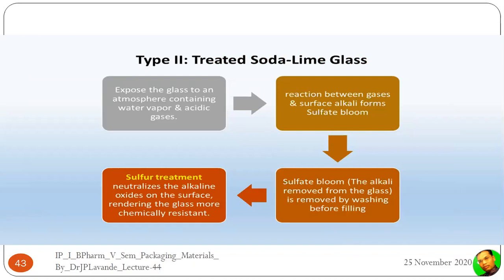In the sulfur treatment process, the glass is exposed to an atmosphere containing water vapor and acidic gases, causing a reaction between the gases and surface alkali to form a sulfate bloom. These sulfate blooms are removed by washing before filling. This treatment neutralizes the alkaline oxides on the surface and renders the glass more chemically resistant.